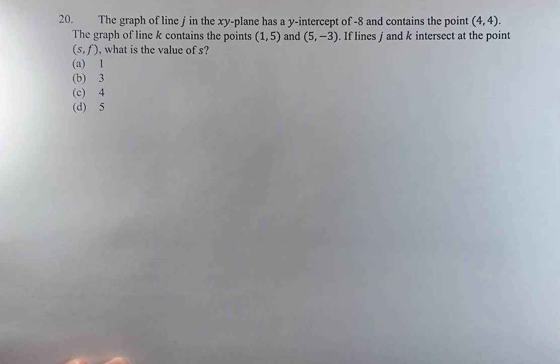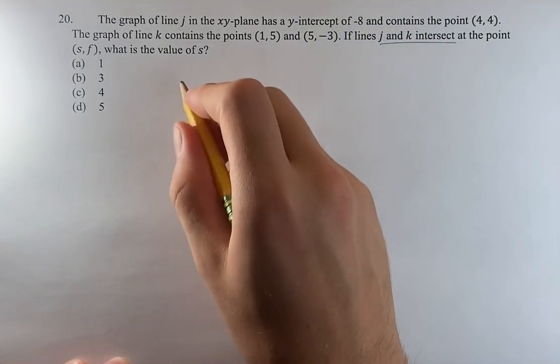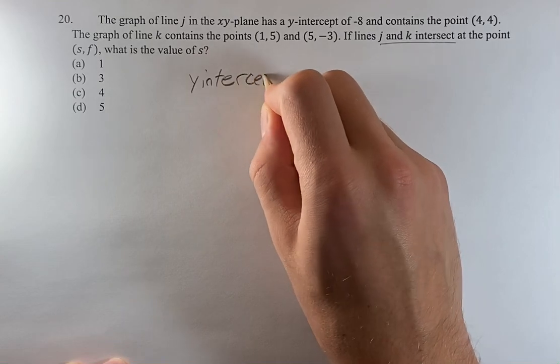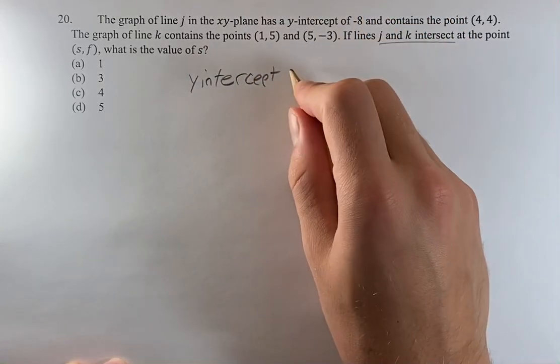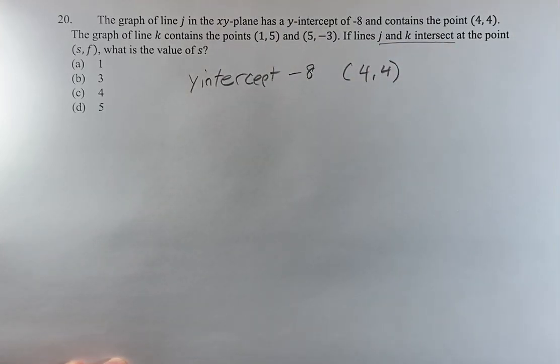Hello and welcome back to another video. Today we're finding the intersection point between lines j and k. The easiest way to do this is to find the two equations of the lines, set them equal to each other, and that'll give you your point that you're looking for.